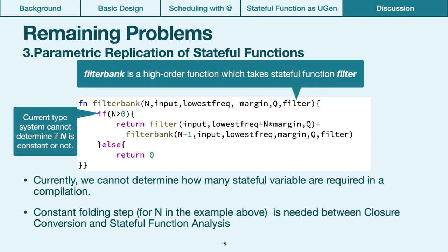And the final problem is, current version of Mimium cannot express the parametric replication of stateful functions. For example, in the slide, the function filterbank is a higher order function, which takes some stateful function filter as an argument. And the instance of the state variable filter should be determined by the first argument N. However, N is unknown when it is compiled. To solve this, constant folding should be performed before the stateful function analysis step. And further problem here is that we cannot detect if the argument is compile-time constant or not compile-time constant in the current type system.